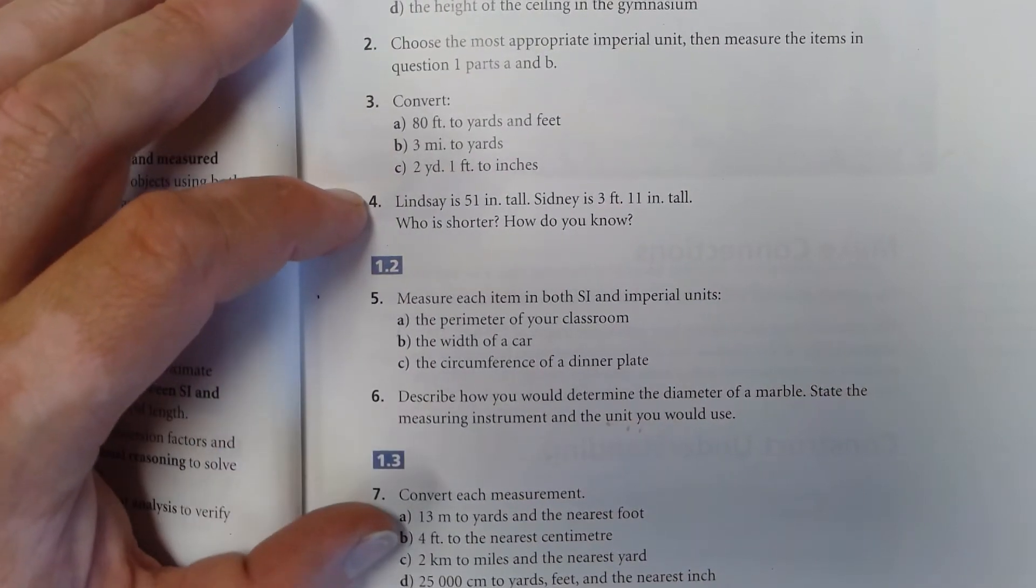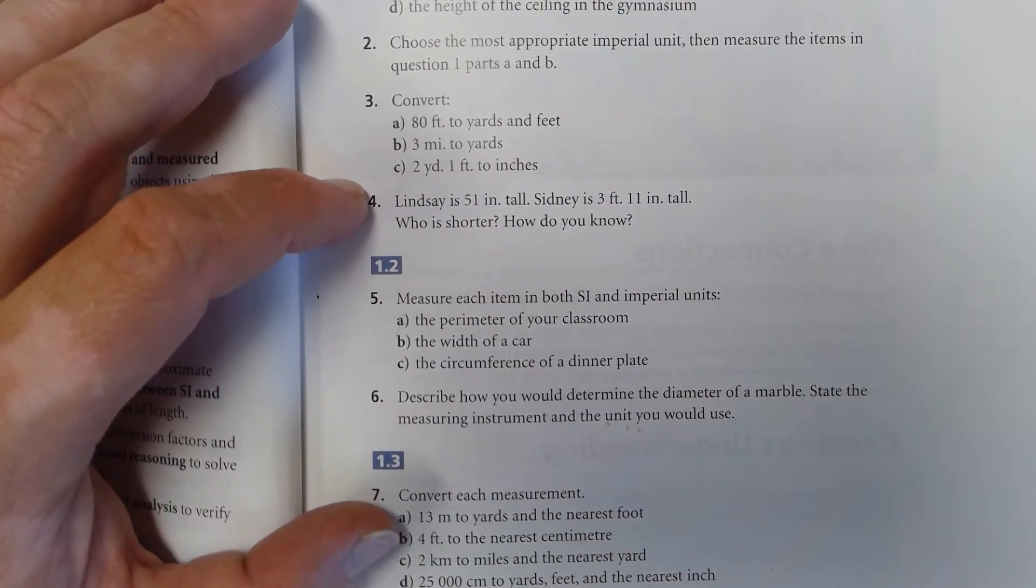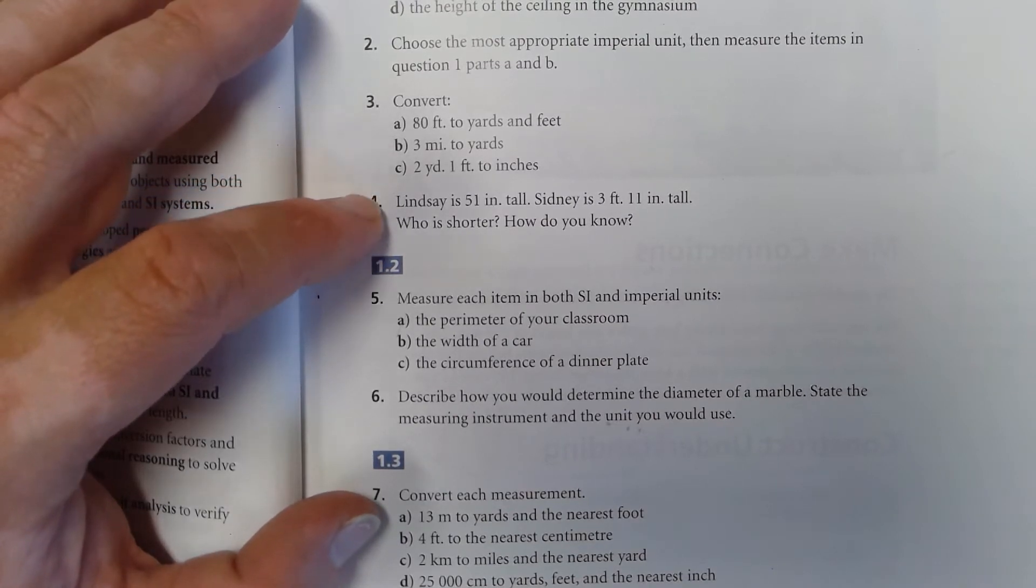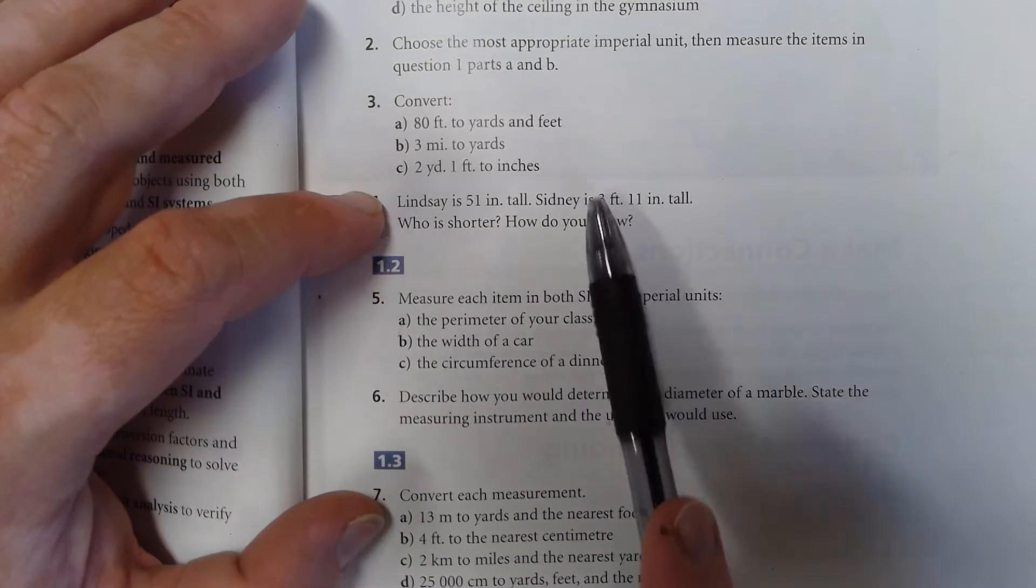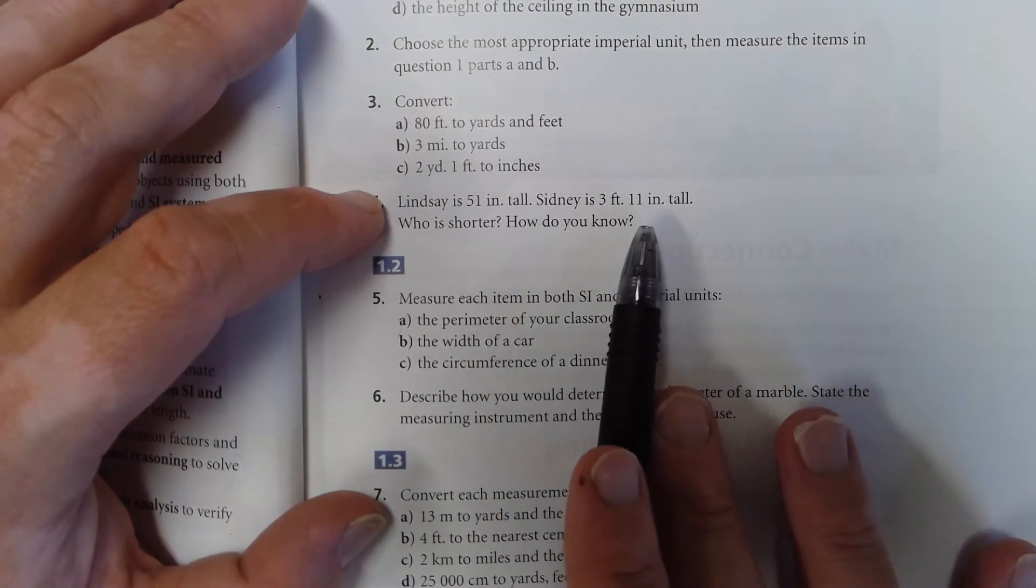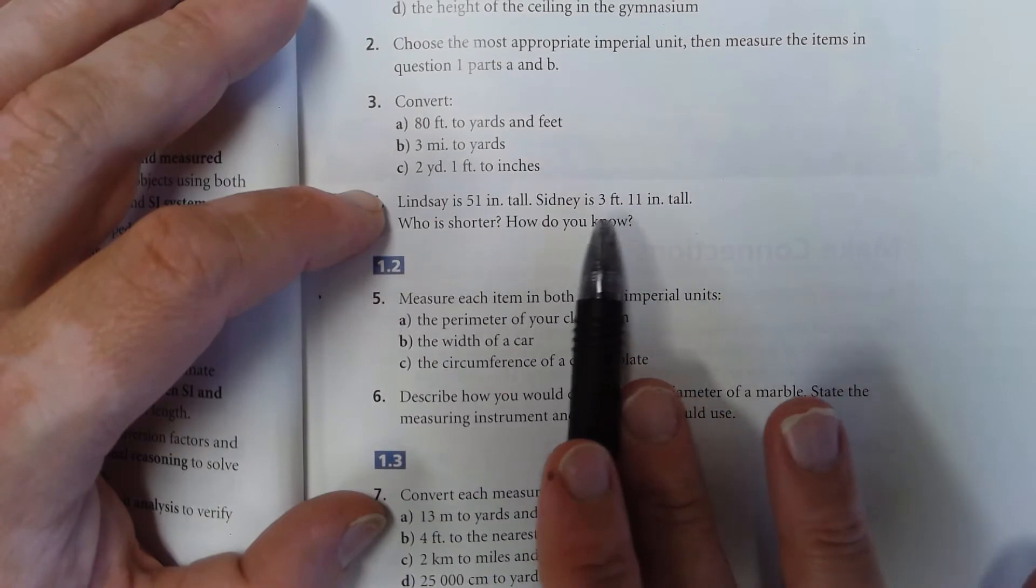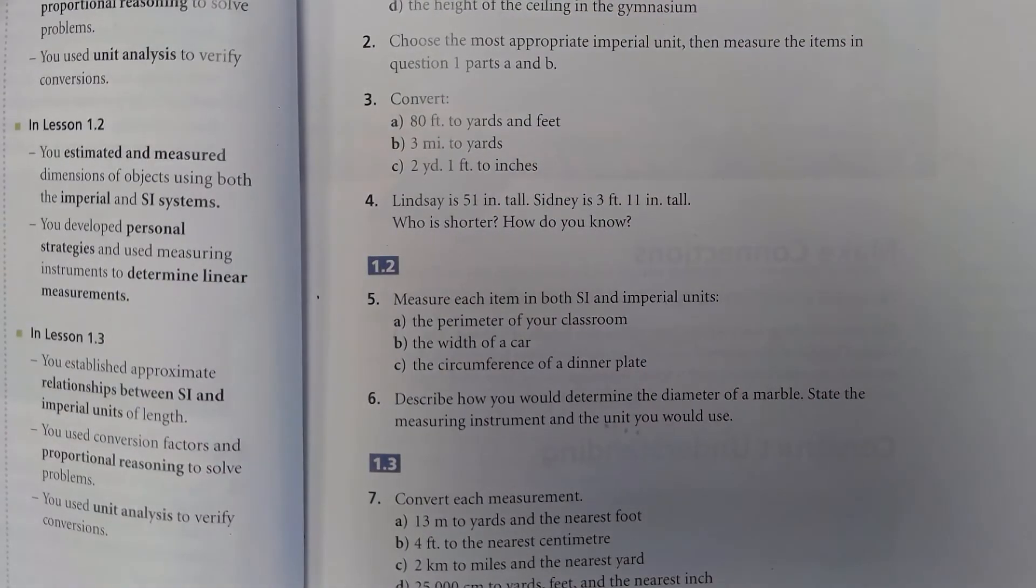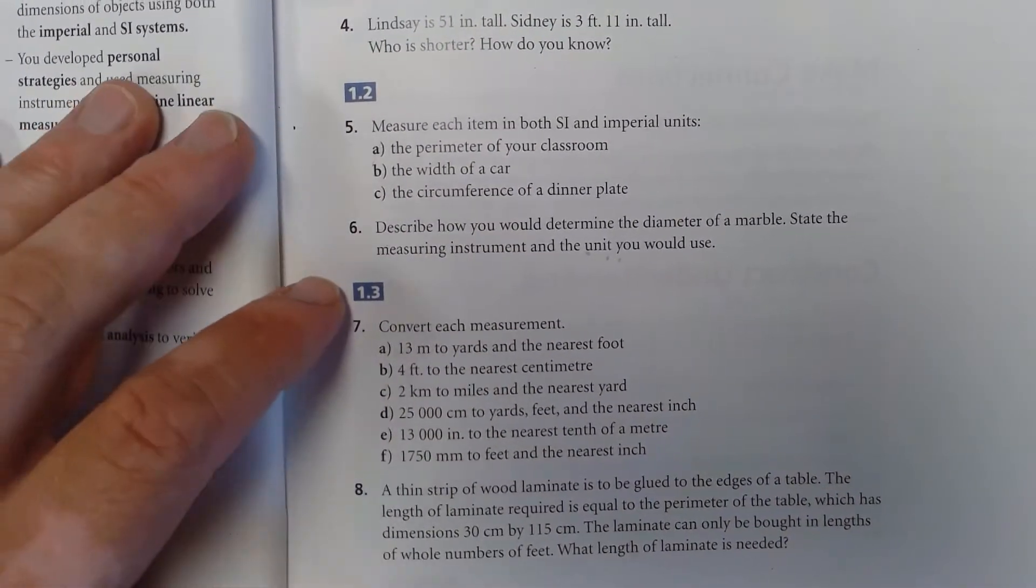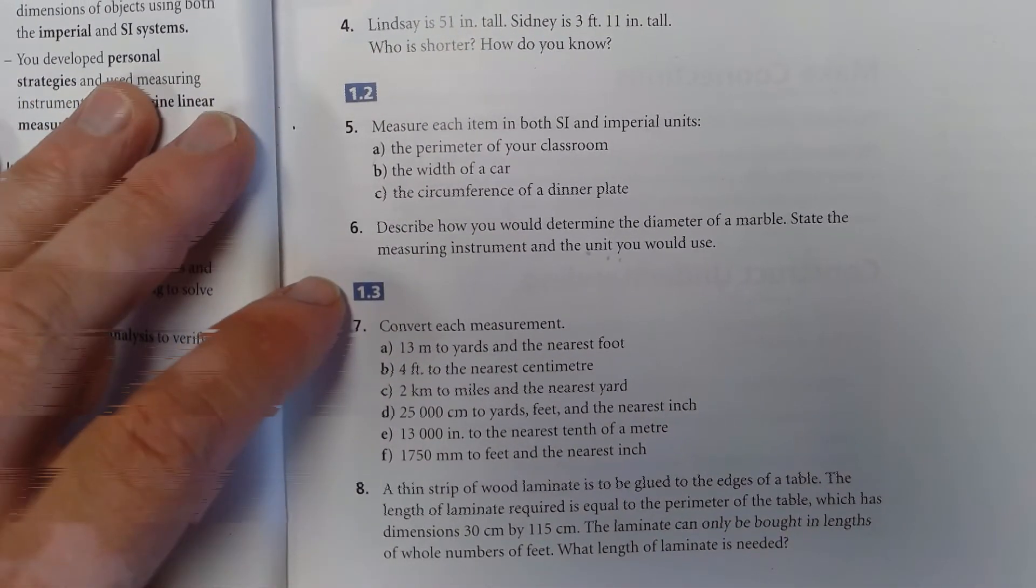Number 4: Lindsey is 51 inches tall, Sydney is 3 feet 11 inches tall. Who is shorter? How do you know? I would take his height and turn the whole thing into inches. You've already got 11 inches here, so turn these feet into inches and then simply compare the two.